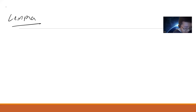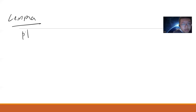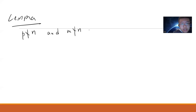Before we do this, let's introduce a lemma. This lemma says: if you have a prime p that does not divide n, and m divides n but m is less than n — so it's a proper divisor — then the following two things cannot happen simultaneously.